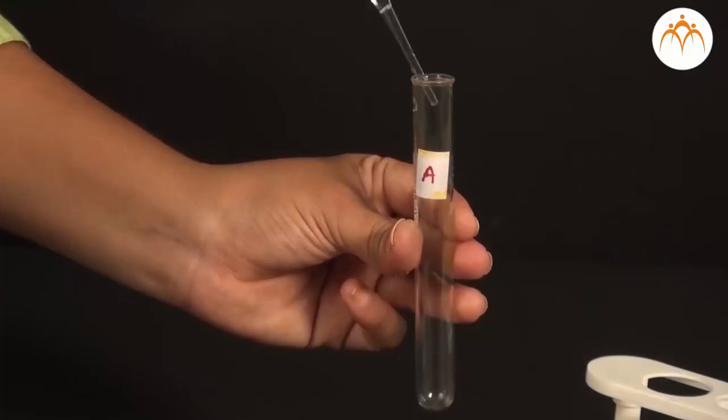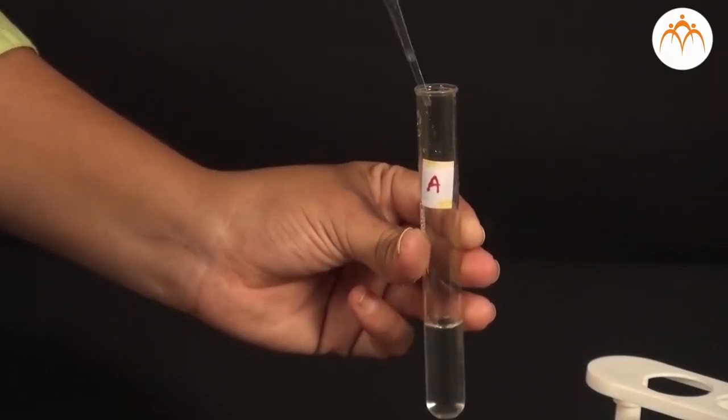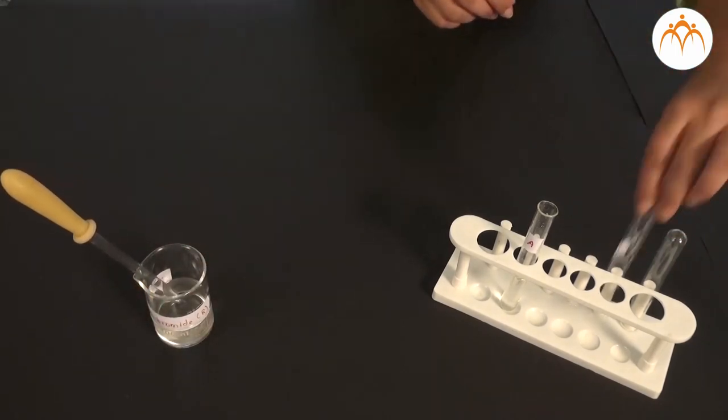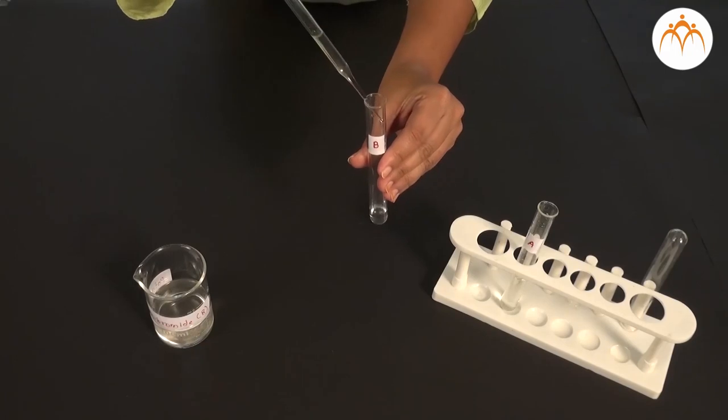Which test tube contains chloride, which test tube contains bromide and which test tube contains iodide? We keep these test tubes A, B and C on the test tube stand and add a few drops of silver nitrate to these three test tubes.